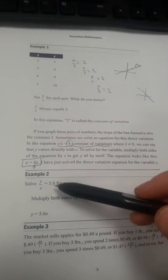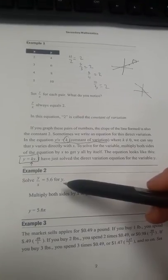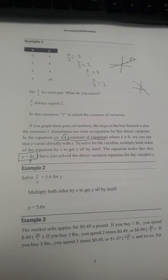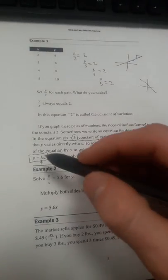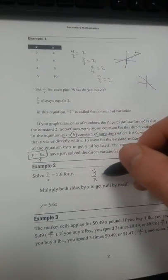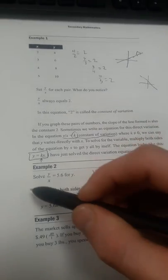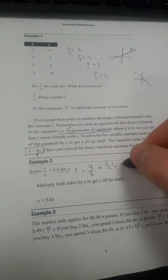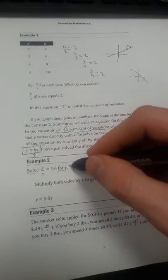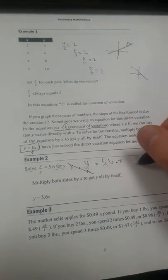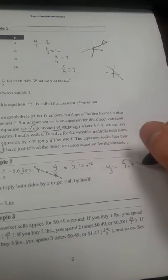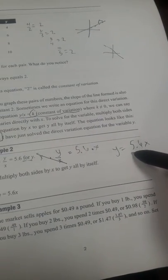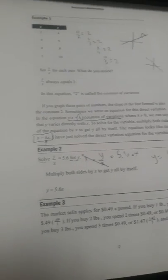Here's example two. If y over x equals 5.6, solve for y. So we want to basically get an equation. y over x equals 5.6. And we want to solve for y. So we want y alone. So we're going to times each side by x and times each side by x. The x is over here cancel. And we're left with y equals 5.6 times x. So if you look here at the y equals kx, the k is the 5.6.